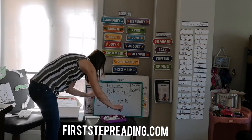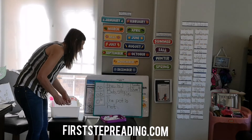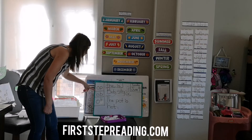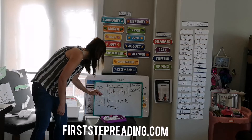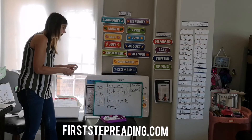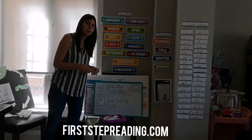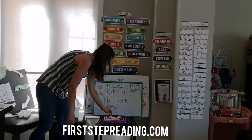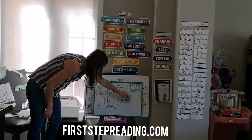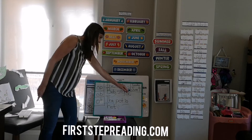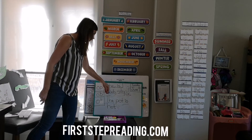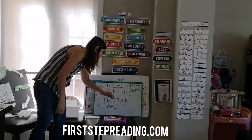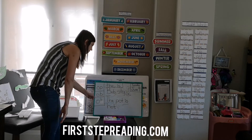We're practicing our ob and ot word families. Op, like stop. Ot, like pot and hot. These are short O vowel word families. The two sight words here today are the and is. You can circle your ob and ot word families and underline your sight words the and is. Those are our sentences for today.